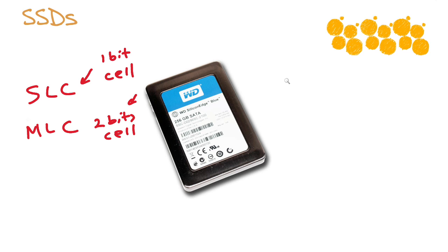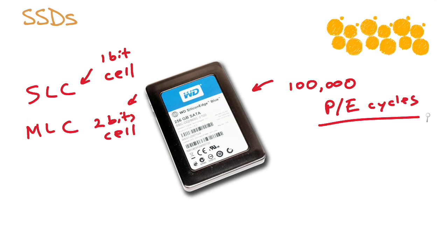Remember, it's a program-and-erase type of process. They literally measure the lifespan of one of these drives in how many program-and-erase cycles you can have. For instance, with single-level cell technology, we can have 100,000 program-erase cycles before we really start to worry about the health of those cells. When we start doing two-bit cell technology, that number may go down to 10,000 as far as the overall lifespan of that device.